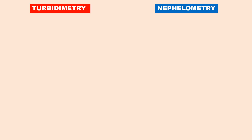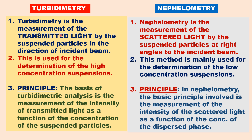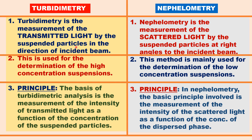Both turbidimetry and nephelometry are related techniques with common instrumentation. The only difference is the detection direction. Turbidimetry is the measurement of transmitted light by suspended particles in the direction of the incident beam, whereas nephelometry is the measurement of scattered light by suspended particles at right angles — perpendicular to the incident beam. Turbidimetry is used for high concentrations of suspensions, whereas nephelometry is used for low concentration suspensions.